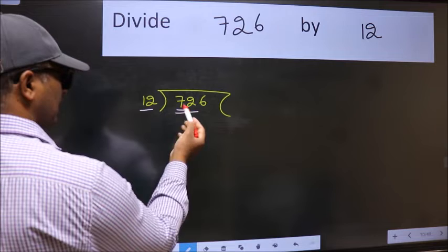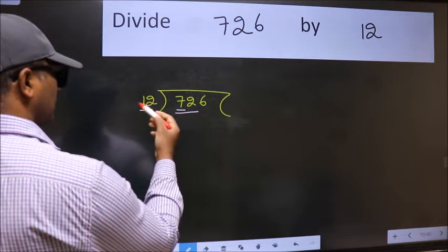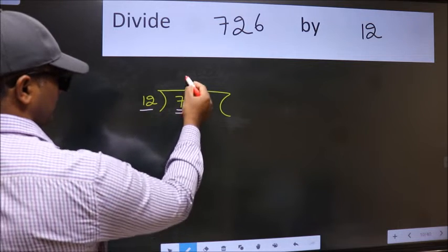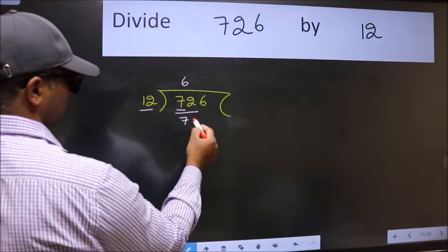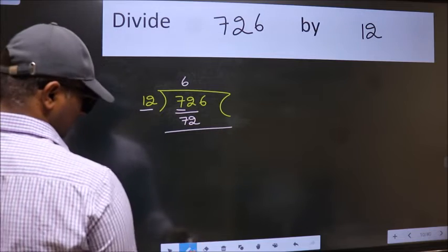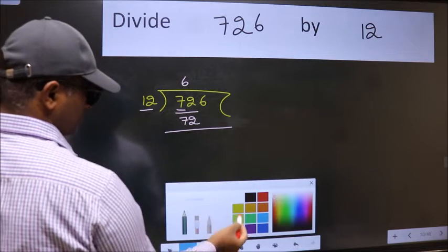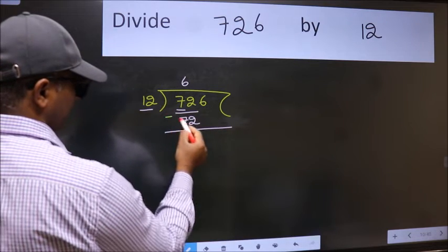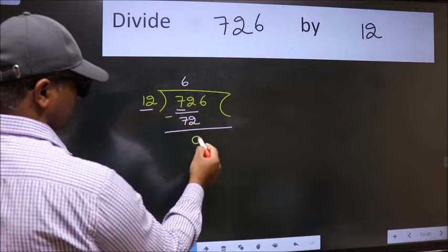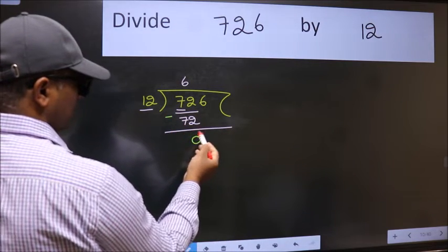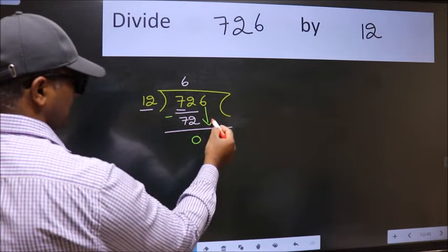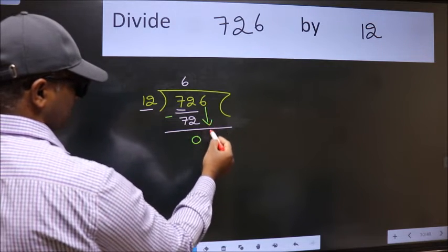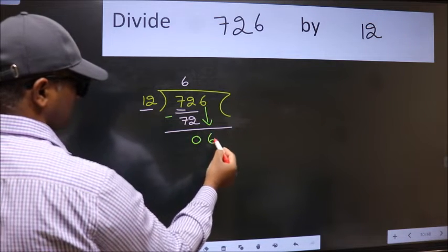When do we get 72 in the 12 table? 12 times 6 is 72. Now we should subtract — we get 0. After this, bring down the beside number, so 6 comes down.